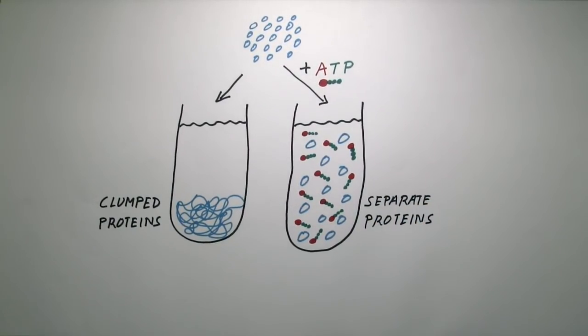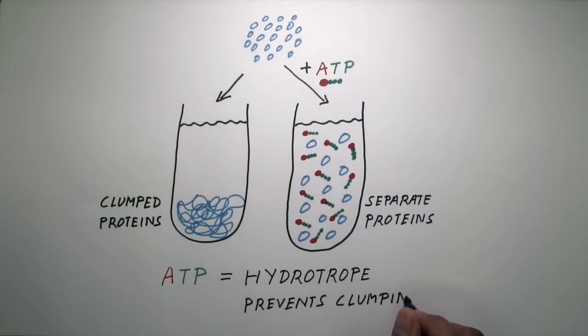The chemical structure of ATP resembles that of a hydrotrope. Hydrotropes can prevent molecules from clumping together.